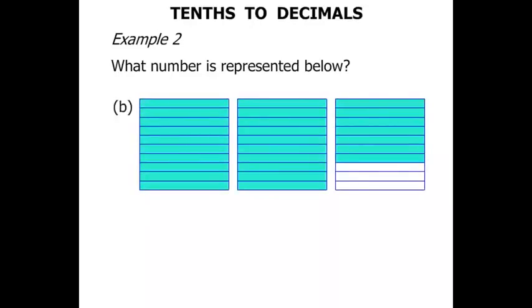The next one. Well we can see there's 2 whole shaded there. 1, 2. So 2 so far. And as a fraction we've got 1, 2, 3, 4, 5, 6, 7. 7 parts out of those 10. We write that as 7 tenths. So altogether we've got 2 and 7 tenths. And in decimal form we write 2.7.